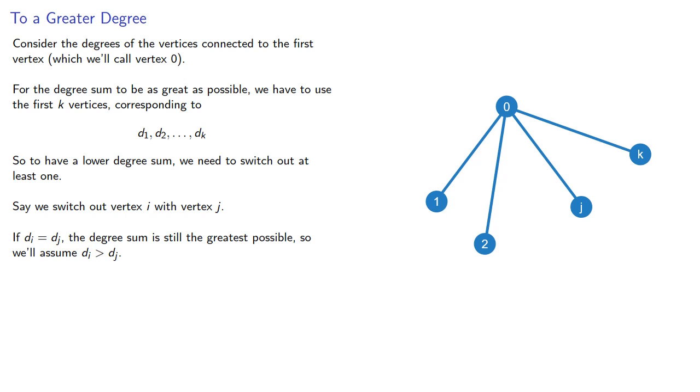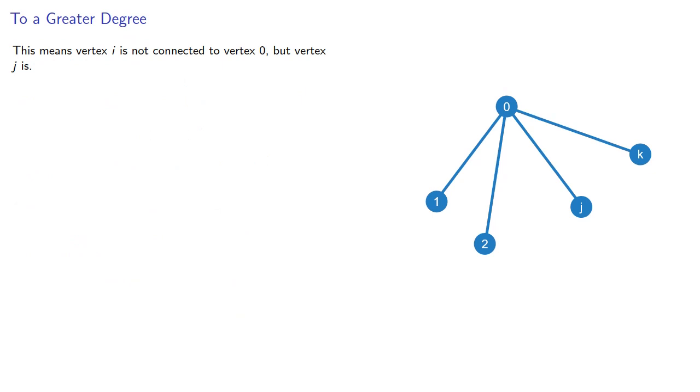In other words, we've replaced the connection with one vertex with a connection to a vertex of lower degree. The important thing here is this means vertex i is not connected to vertex 0, but vertex j is.